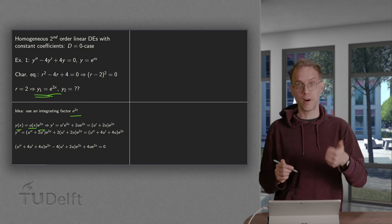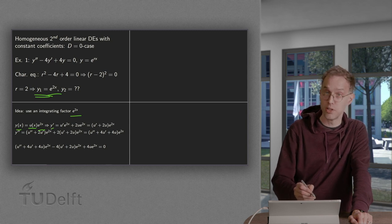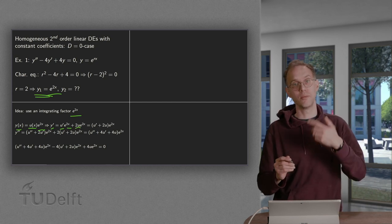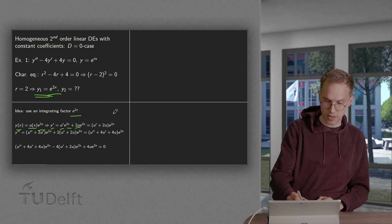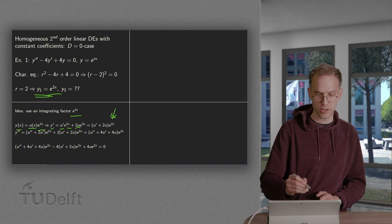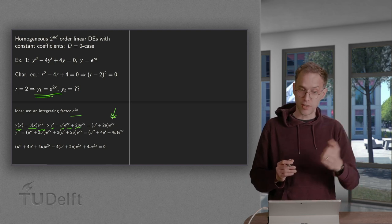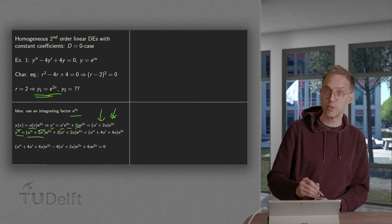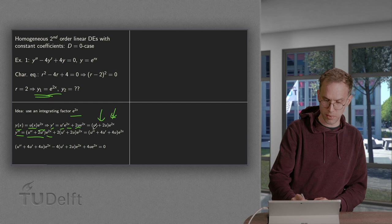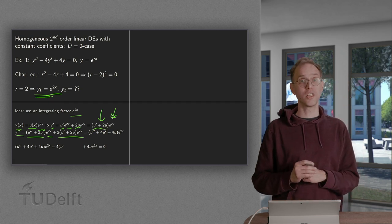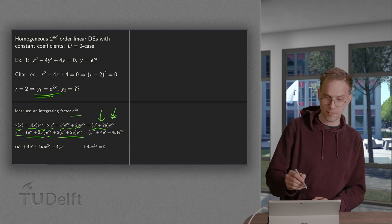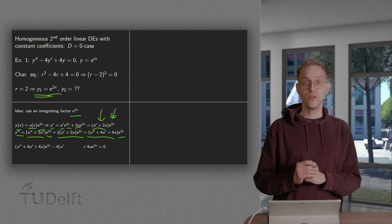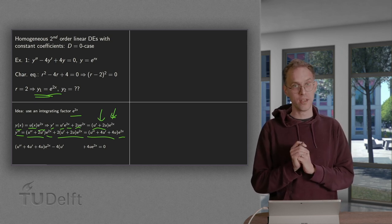To use this, we compute y' and y''. Using the product rule, y' = (u' + 2u)·e^(2x). Then y'' = (u'' + 2u')·e^(2x) + 2·e^(2x)·(u' + 2u), and combining everything gives y'' = (u'' + 4u' + 4u)·e^(2x).